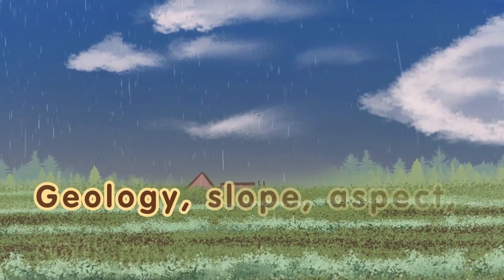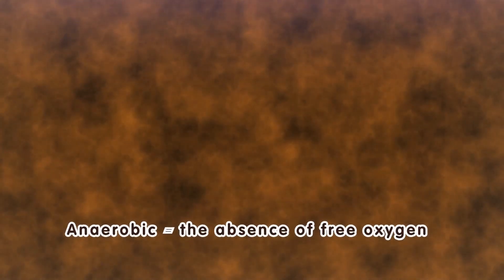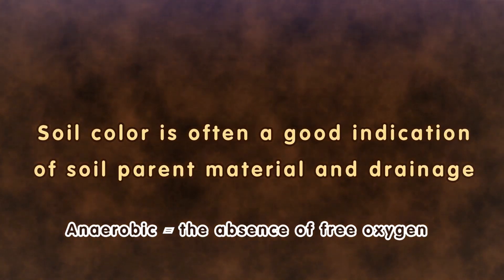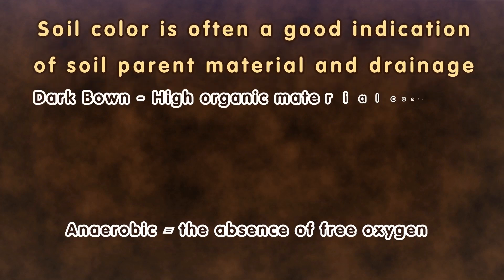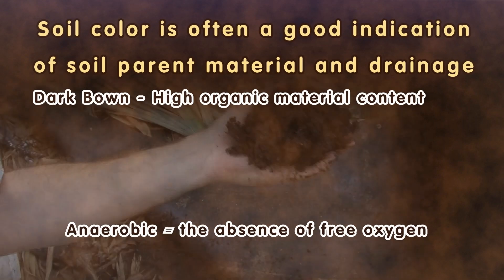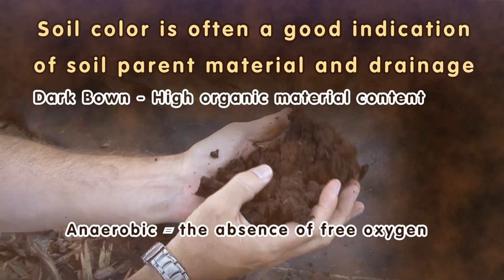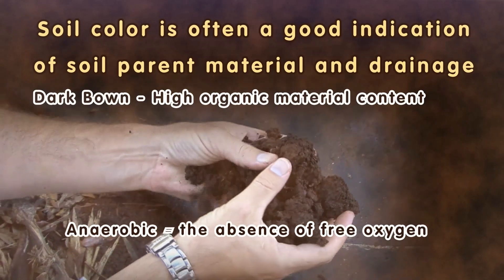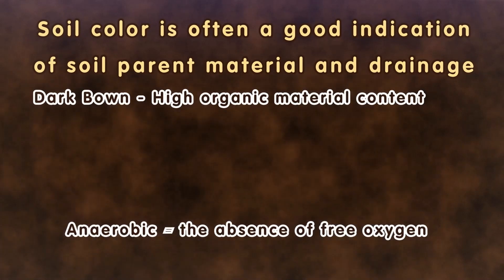The next important agroecosystem detail is to think about geology, slope, aspect, soil type, and drainage. We've talked about soil color, and it turns out that in most cases — not all — soil color is a good indication of the soil parent material and drainage. Almost always, dark brown means a high organic matter content. I'm going to bring in our sifted soil to look at — you'll see the color and why we were both so excited, even though it had low soil fertility, we knew it had once had high organic matter content.